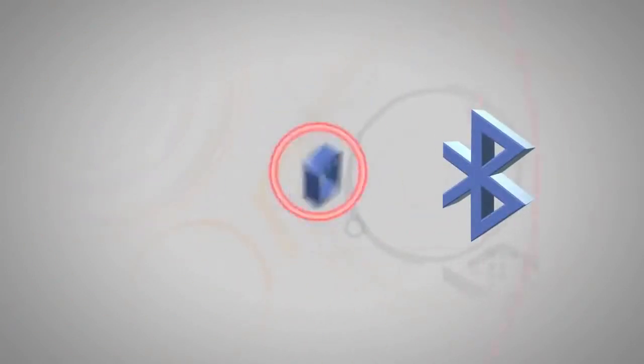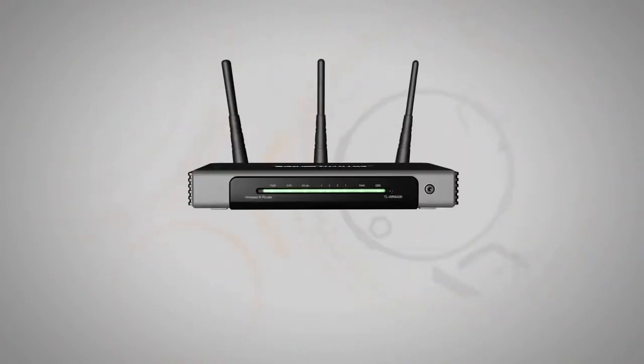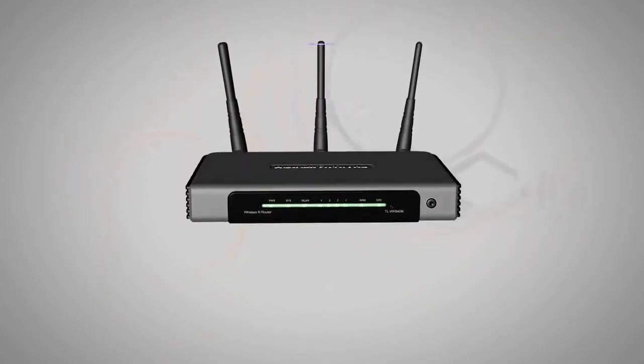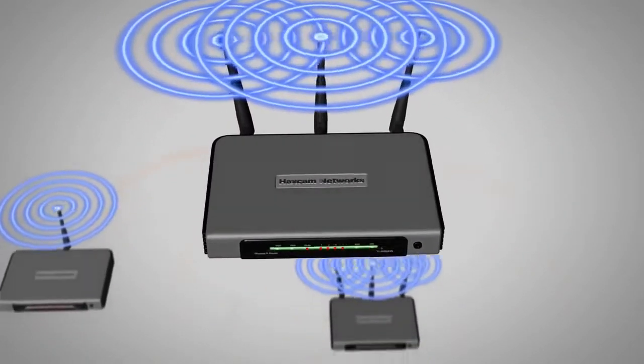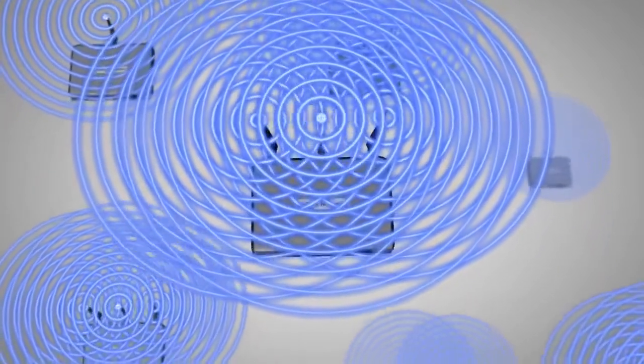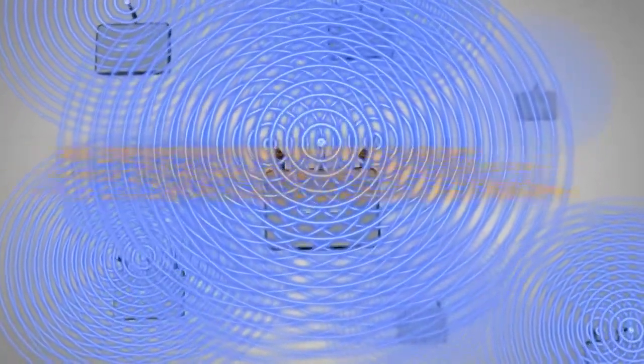But not from microwave ovens, cordless phones, or Bluetooth signals. It's Wi-Fi itself. Traditional Wi-Fi access points flood transmissions in all directions. A signal that goes anywhere except to the intended receiver is just interference.